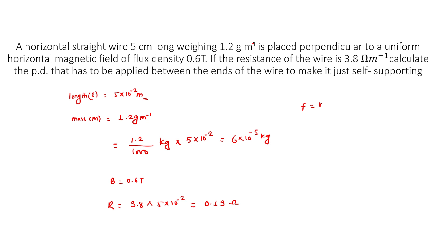F equals BIL sin theta. Since the wire is perpendicular to the field, Mg equals BIL sin theta.